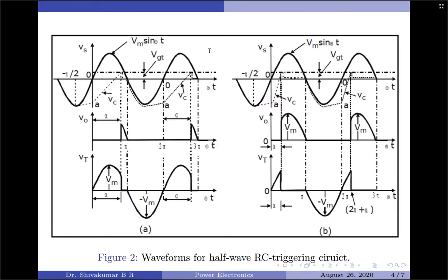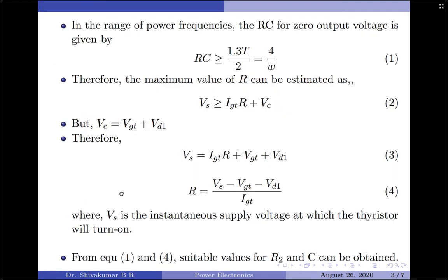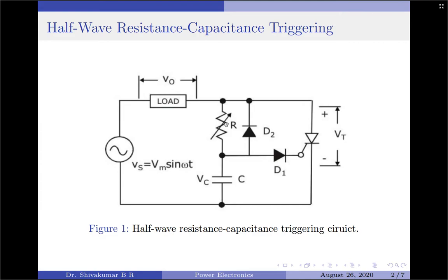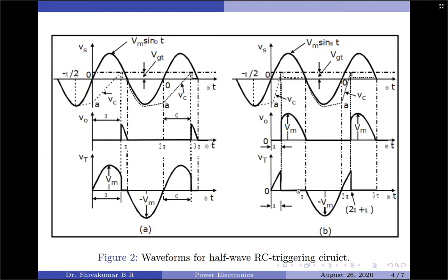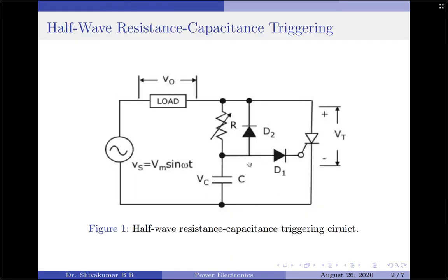Coming to the waveforms, we have two different sets. The first set is when alpha is very large, which will occur when the value of R is very large. The second set will occur when the value of R is small. The overall idea is: if the variable resistor is very high, the capacitor charges slowly, and therefore the gate current reaches the gate threshold current for a higher value of alpha — very similar to what we have seen for resistance triggering.